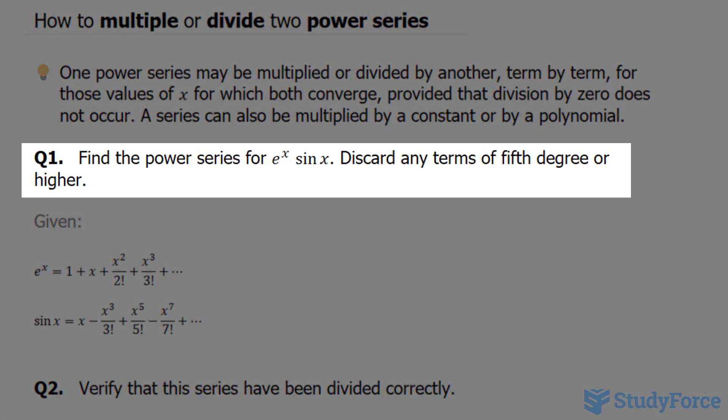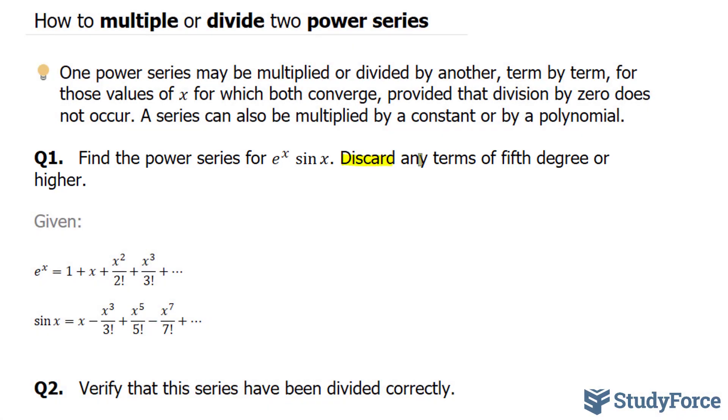The question reads, find the power series for e to the power of x times sine x. Discard any terms of fifth degree or higher. This part's really important, so keep that in mind.